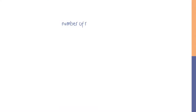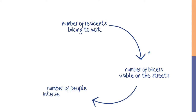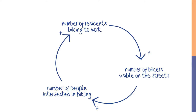Let's look at a specific example of how a new idea can be shared via reinforcing feedback. The core of this reinforcing feedback loop shows that as more residents begin biking to work, the number of bike riders visible on streets increases, which leads to an increase in the number of people interested in biking to work. As some of them try it out, the number of residents biking to work increases, and so on around the feedback loop.